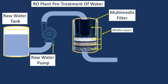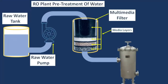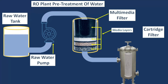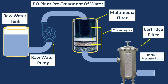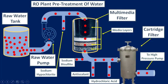The outlet water of the multimedia filter flows to the cartridge filter. In the cartridge filter, suspended solids up to 5 microns are removed. The cartridge filter then feeds the water to the high-pressure pump of the RO plant.